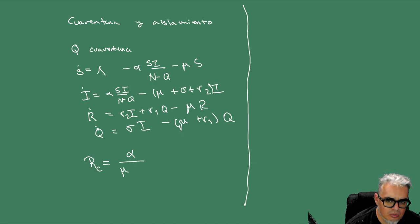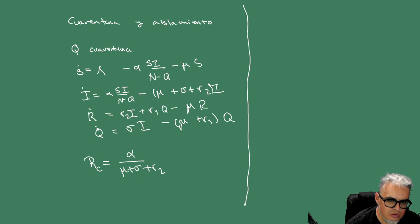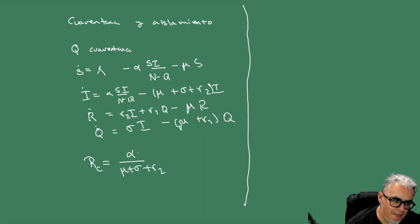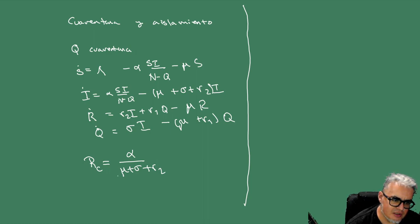RC es alfa sobre mu más sigma más R2. Esos son los nuevos infecciosos sobre los factores de salida. Para distintas alfas vamos a tener distintos comportamientos del R0.